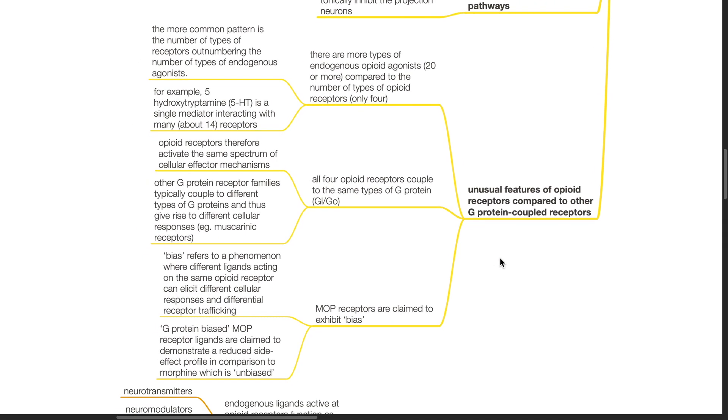Unusual features of opioid receptors compared to other G-protein coupled receptors: There are more types of endogenous opioid agonists, 20 or more, compared to the number of types of opioid receptors, which are only 4. The more common pattern is the number of types of receptors outnumber the number of types of endogenous agonists. For example, serotonin is a single mediator interacting with many receptors, about 14.